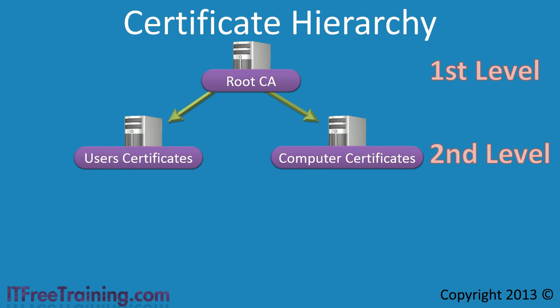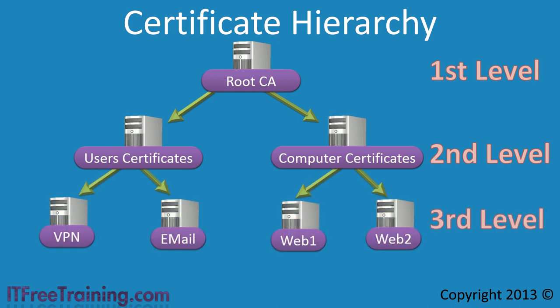Since the root CA holds the private key that effectively is the key to the entire certification infrastructure, it should be protected. In some cases, a company will install the root CA on removable media. Once the root CA is not needed anymore, the removable media is placed in a safe until it is needed again. The second-level CAs are free to issue certificates without the root CA, so the system will work fine even though the root CA is offline. Having the root CA offline helps keep it secure. The second-level CA will often issue certificates to users and computers — for example, a certificate may be issued to a user so their identity can be checked when using a VPN connection.